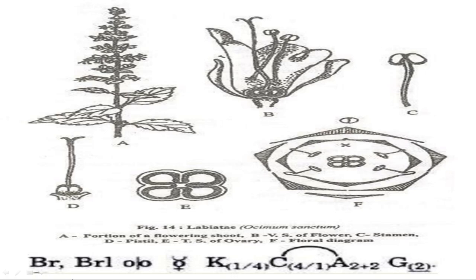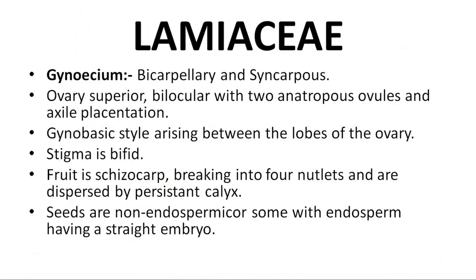Floral formula: bracteolate, zygomorphic, bisexual; calyx 1+4; corolla 4+1; androecium 2+2 (2 long and 2 short). Gynoecium: bicarpellary, syncarpous, hypogynous, superior ovary, bilocular with 2 anatropous ovules and axile placentation.